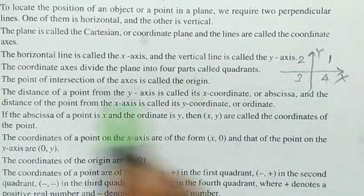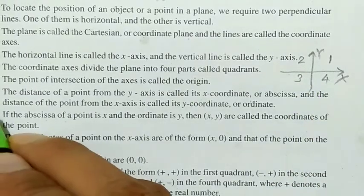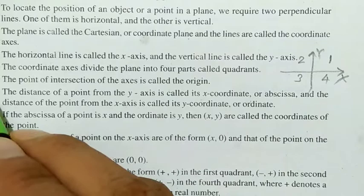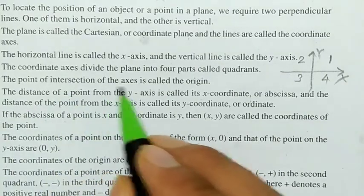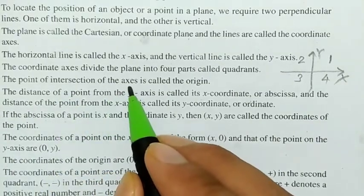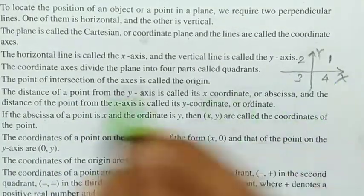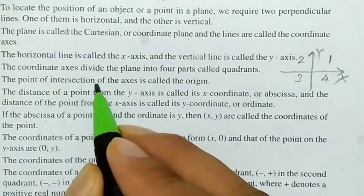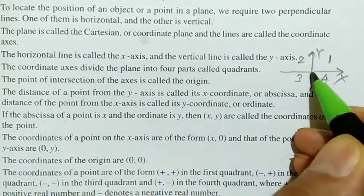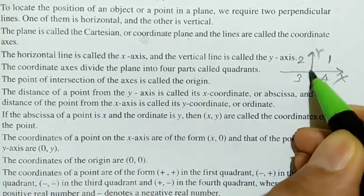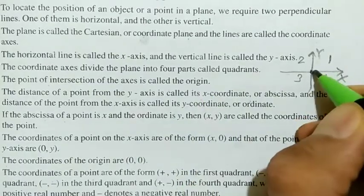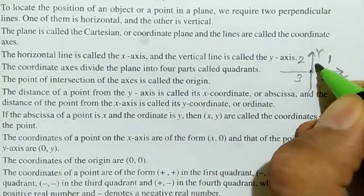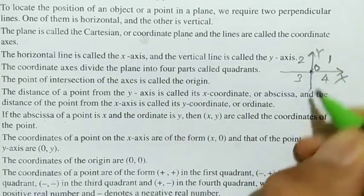The point of intersection of the axes — where the x-axis and y-axis cut each other — this point is called the origin, denoted by O.